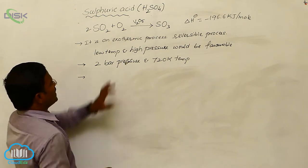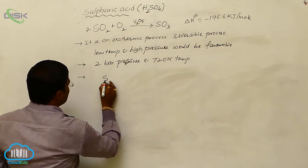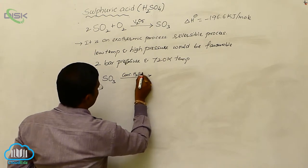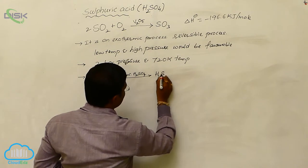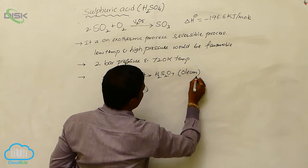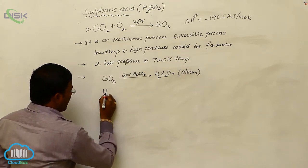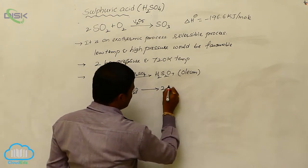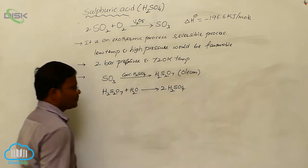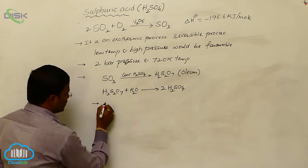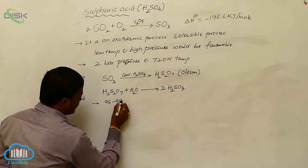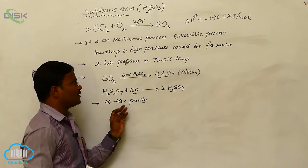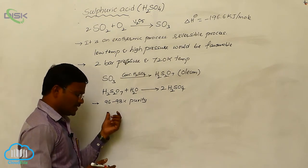In the second step, sulfur trioxide is formed. The sulfur trioxide from the second step, in the presence of concentrated sulfuric acid, converts into H2S2O7, which we call oleum or pyrosulfuric acid. This pyrosulfuric acid, when reacted with water, converts into sulfuric acid. The produced sulfuric acid has 96 to 98 percent purity.